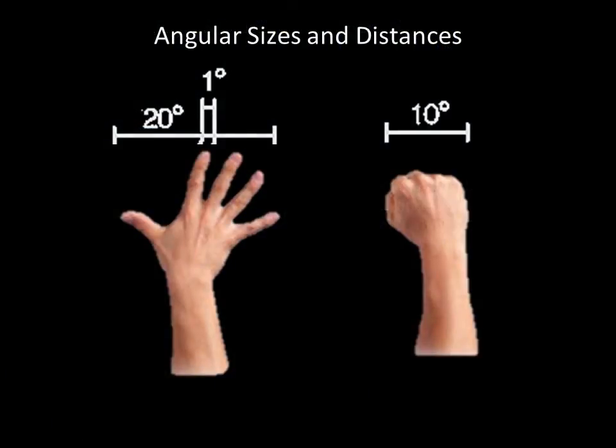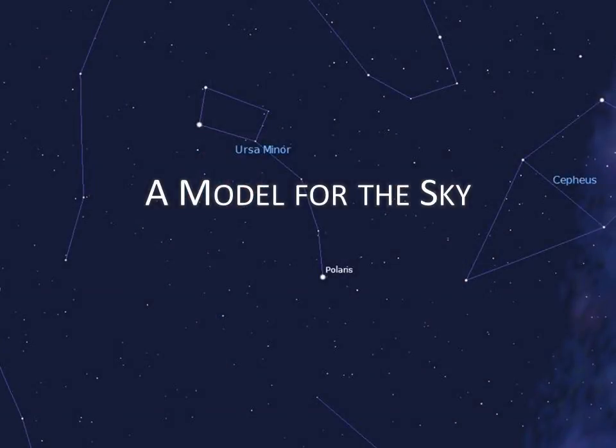You don't need a fancy tool to measure angular sizes and distances — you can use your hand to make rough estimates of angles in the sky. Your hand outstretched is about 20 degrees, your fist is about 10 degrees, and your finger is about 1 degree. Next time, we'll talk about how objects in the sky appear to move from our perspective on Earth.